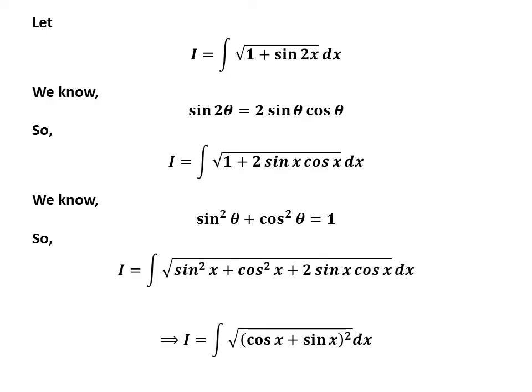As square of sine of x plus square of cosine of x plus 2 times sine of x times cosine of x is in the form of square of a plus square of b plus 2ab, which is equal to square of a plus b, the above integrand becomes square of cosine of x plus sine of x.